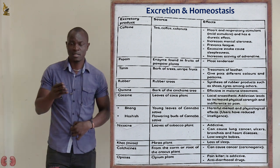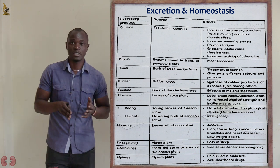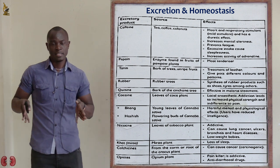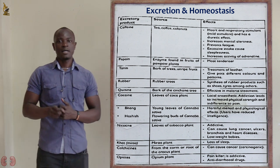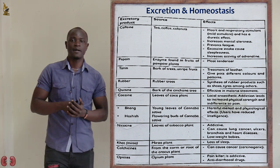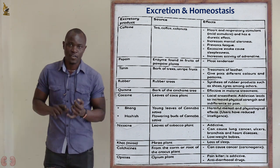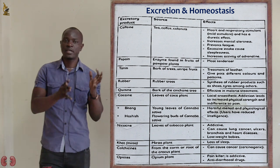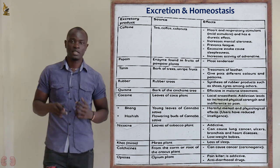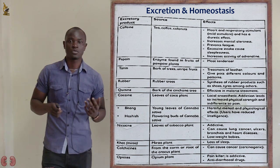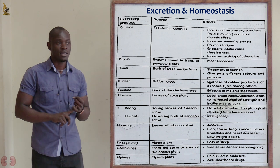Finally, heroin is also obtained from the opium poppy plant. It is a highly illegal narcotic drug. A summary table covering all these excretory products — their sources and effects — will be available in the description link, summarizing everything discussed from the first product to the last.